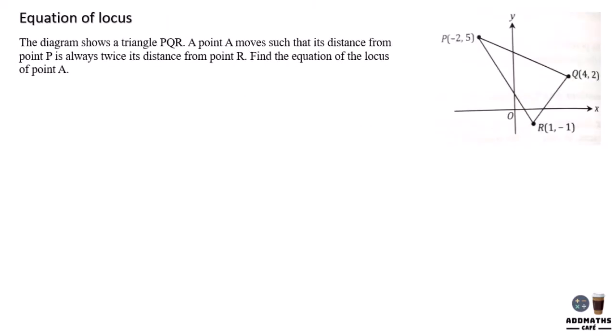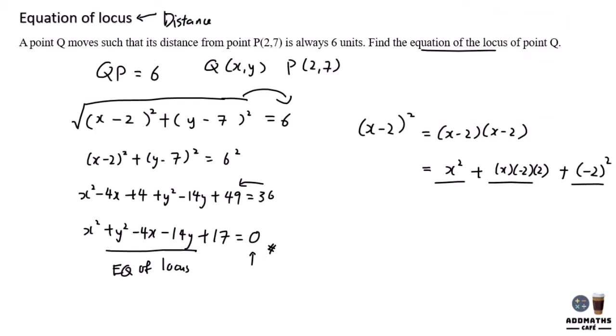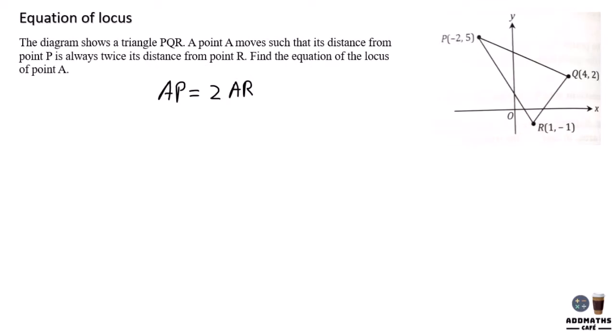In other cases, the equation of locus doesn't have to be equal to a value. It can also equal to the other parts. The diagram shows a triangle PQR. A point A moves such that its distance from P means that AP is always twice from R means that AR. So in the previous question QP equals 6. In this case, your AP equals 2AR and I have no idea what is A. So what I do is label A as (x,y), P as the coordinates shown in the diagram and your R is (1,-1).